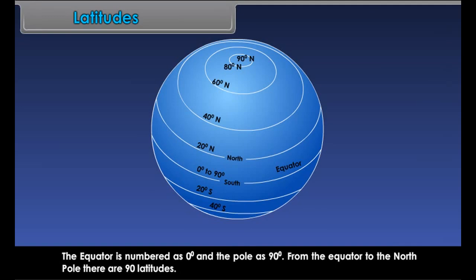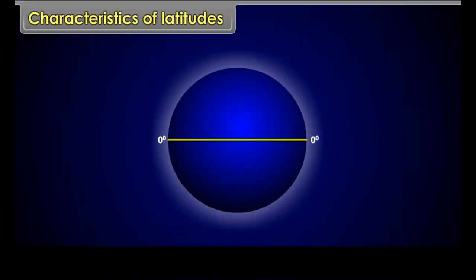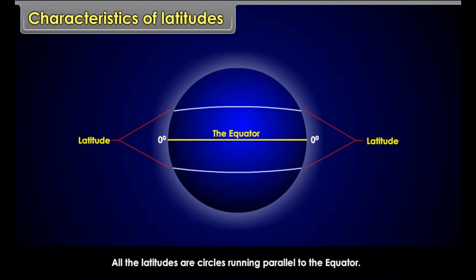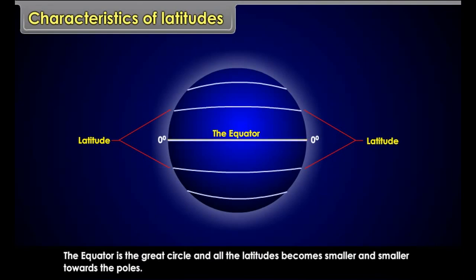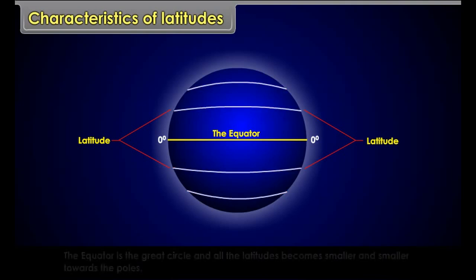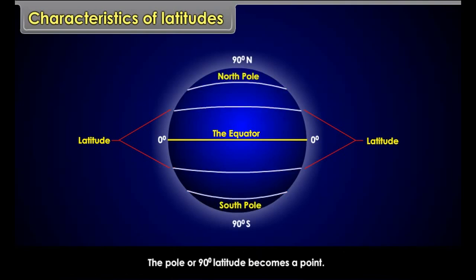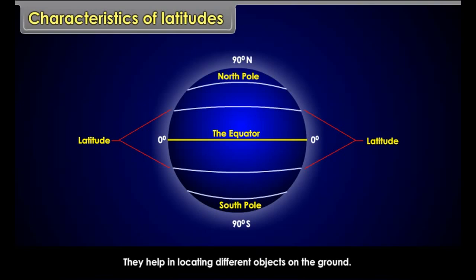From the equator to the north pole there are 90 latitudes. Characteristics of Latitudes: All the latitudes are circles running parallel to the equator. The equator is the great circle and all the latitudes become smaller and smaller towards the poles. The pole or 90 degree latitude becomes a point. They run in east-west direction. They help in locating different objects on the ground and in understanding the climate of a place.